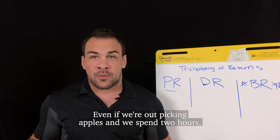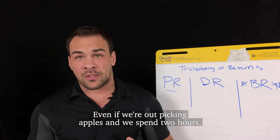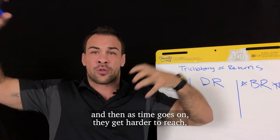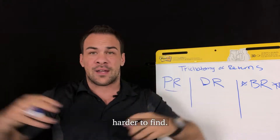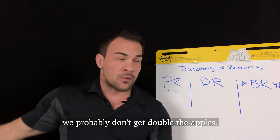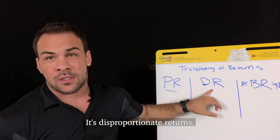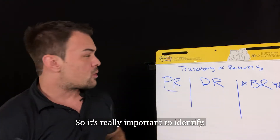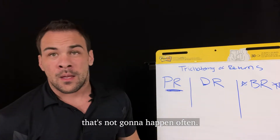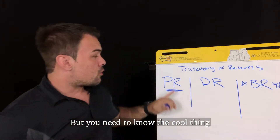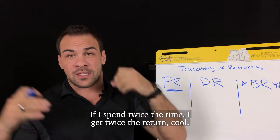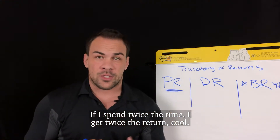Even if we're out picking apples and we spend two hours, we get all the low-hanging apples first. And then as time goes on, they get harder to reach, harder to find. If we double the amount of time we spend, we probably don't get double the apples — that's disproportionate returns. It's really important to identify this. The cool thing about proportionate returns is that it's predictable: if I spend twice the time, I get twice the return.